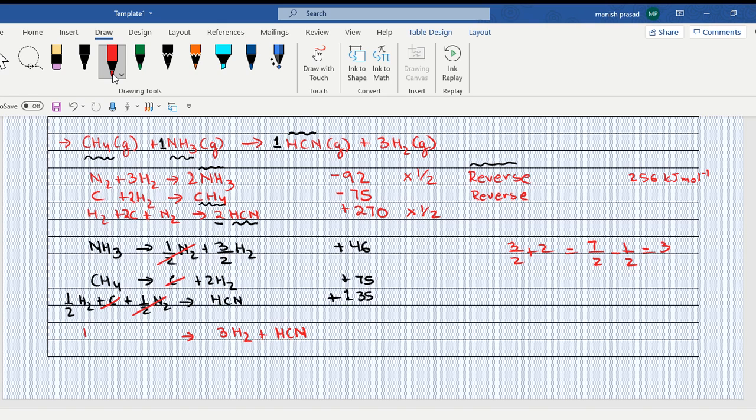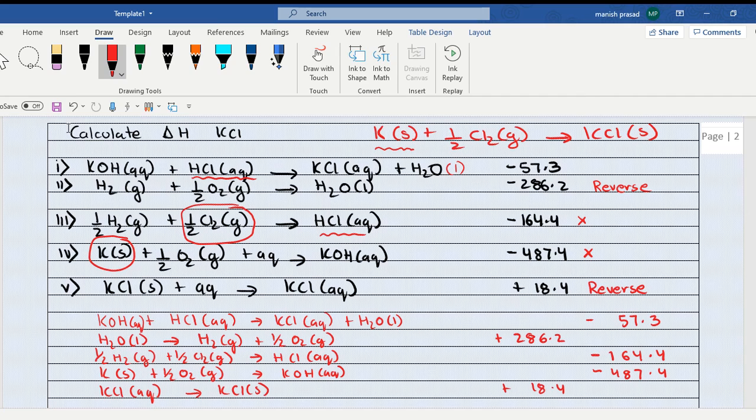Now I have to add all of them: 5, 5, 10, 16, 1, 7, 4, 11, 12, 15. And yes, 256 kilojoules per mole. Aagya beta?